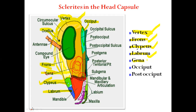The post-occiput is the region located in between the occiput and the neck. It is attached to the membrane of the neck, and this region is posterior to the part of the occiput.